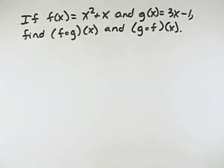If f of x equals x squared plus x and g of x equals 3x minus 1, find f composed with g of x and g composed with f of x.